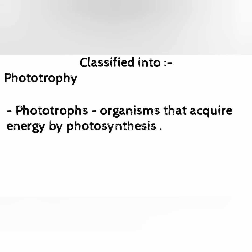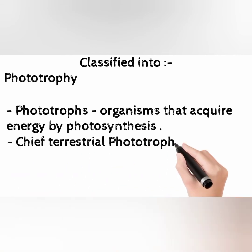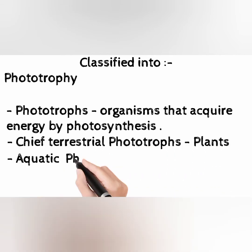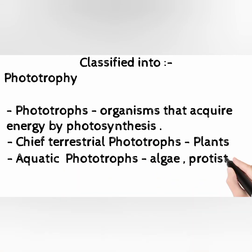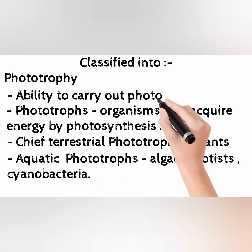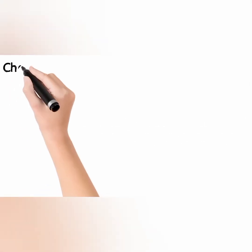Phototrophy is the ability to carry out photosynthesis. Phototrophs are organisms that acquire energy by photosynthesis. Chief terrestrial phototrophs are plants; aquatic phototrophs include algae, protists, and cyanobacteria.